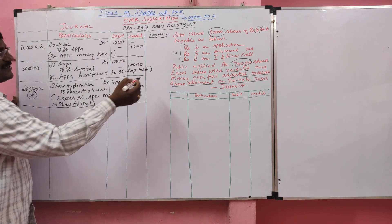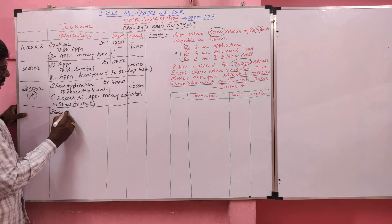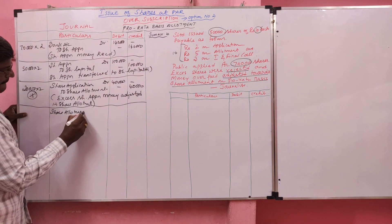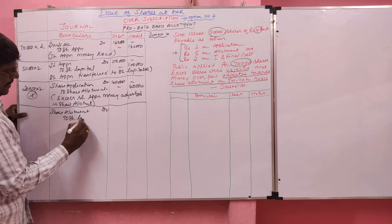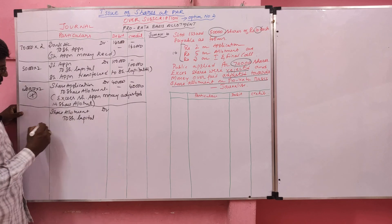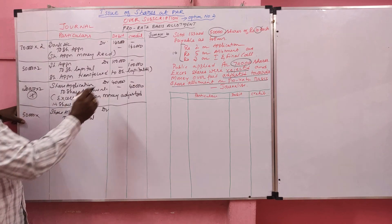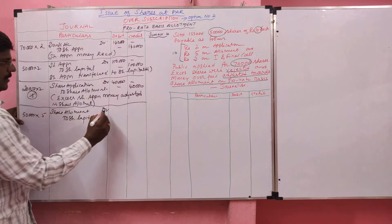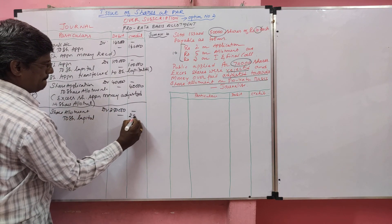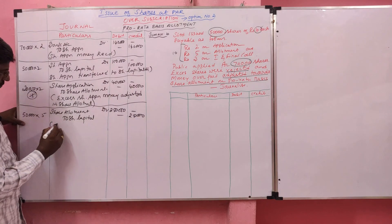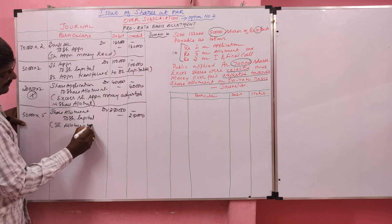Then as usual, we record the share allotment entry. Share Allotment Account Dr to Share Capital. Here, everything is multiplied by 50,000 only. 50,000 × 5 = Rs. 2,50,000. Narration: Share allotment made.